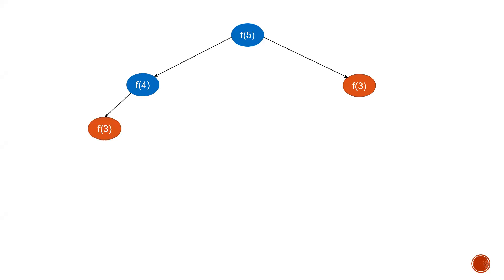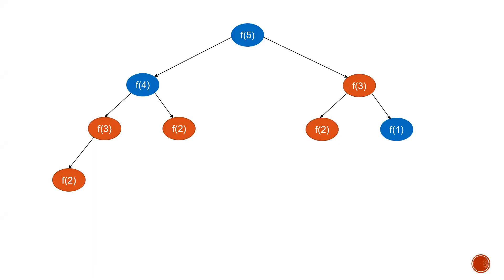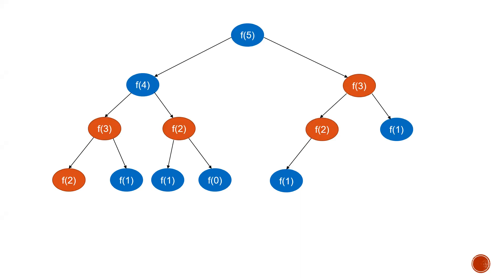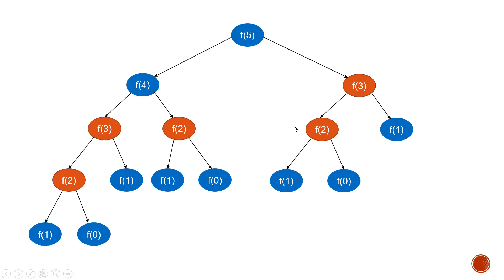Then we need to calculate F(3) again — it's a recursive function — giving F(2) plus F(1). F(2) will be 1 plus 0. Again we need to calculate F(2) as F(1) plus F(0), and so on. If you observe this tree structure, you can clearly see in red that F(3) has been calculated once here and is repeated again on the left side. The same is the case for F(2) as well. There is clearly redundant processing here.